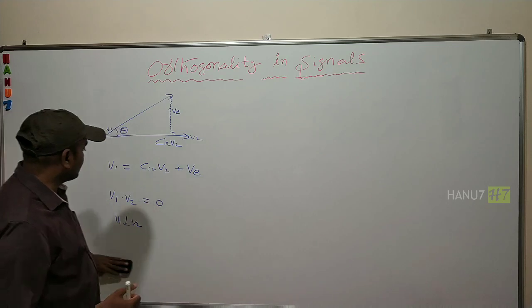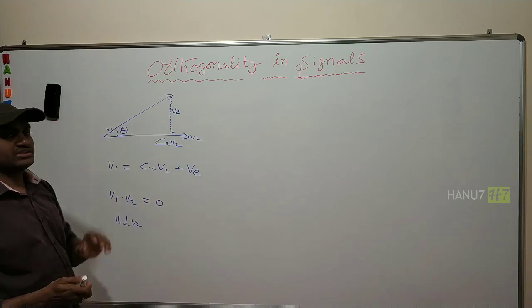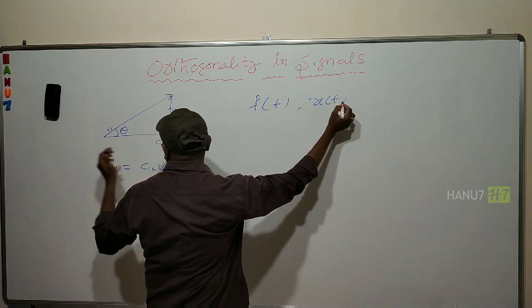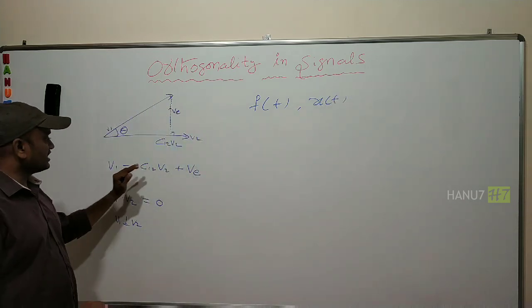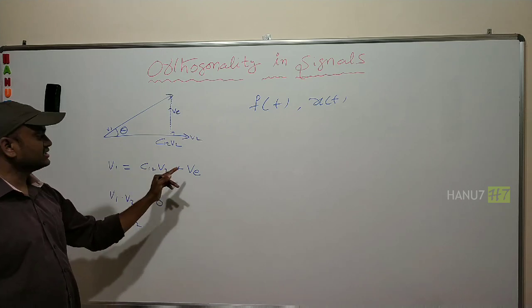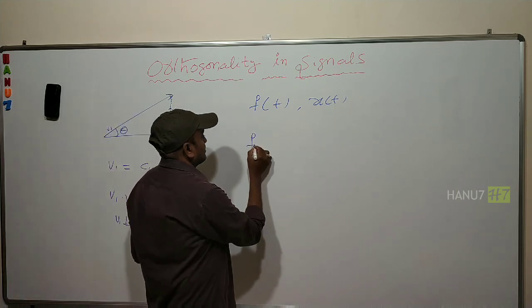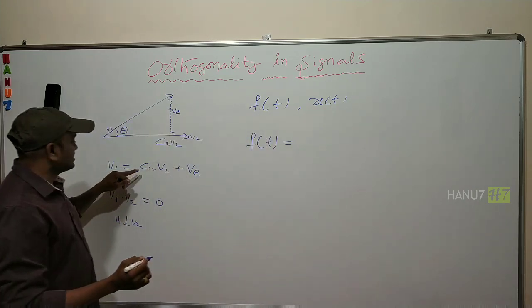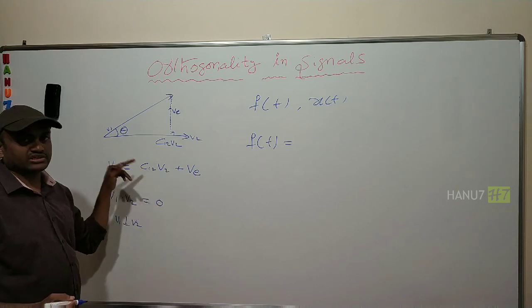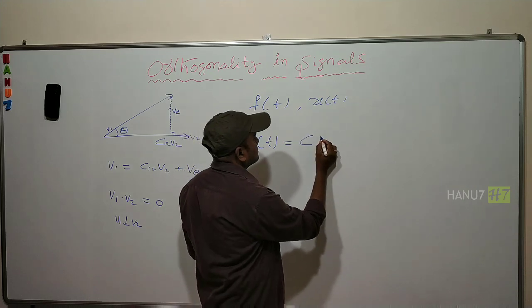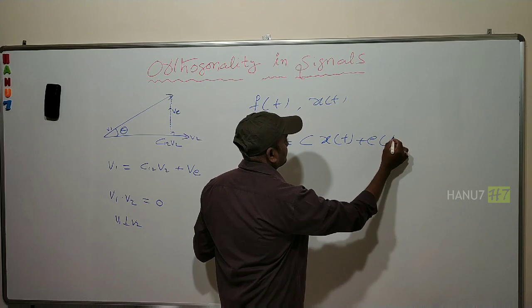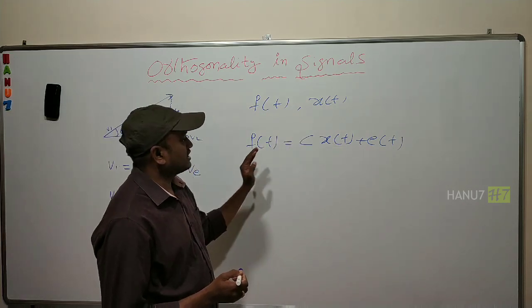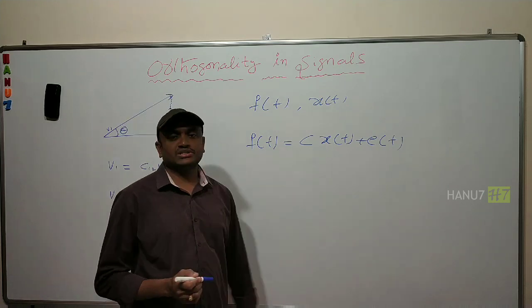Coming to the signals — all the properties of these vectors are applicable to signals. So consider two signals: one signal is F(t) and the other signal is X(t). Same as how we considered V1 and V2 to represent V1 in terms of V2 — the formula V1 = C12 * V2 + V — here also we will get the same. F(t) will be equal to: the component C is getting multiplied to the second signal plus we will get the error signal. So F(t) = C * X(t) + E(t).